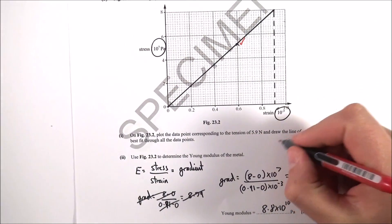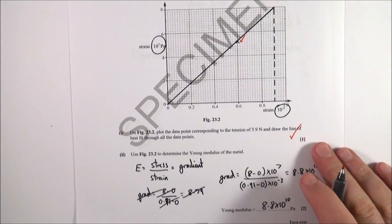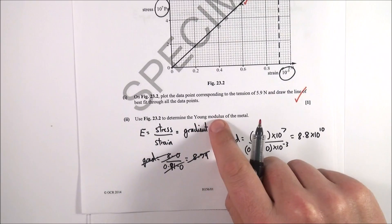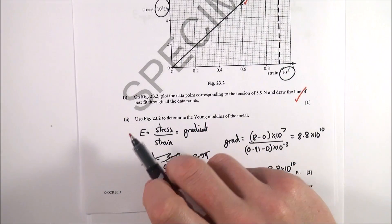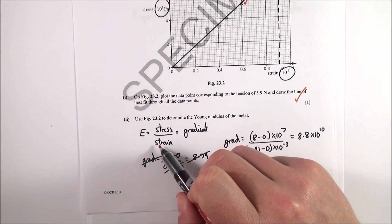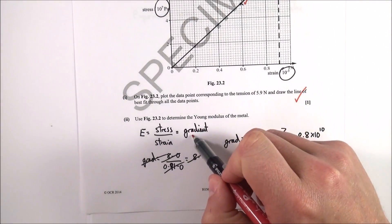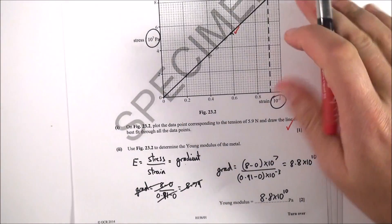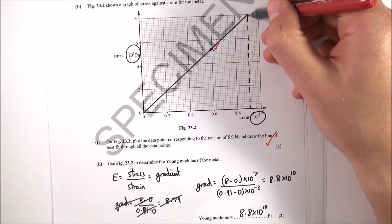The next bit: use this graph to determine the Young's modulus. First, we know that Young's modulus equals stress divided by strain, and that's equal to the gradient where you have this nice linear region. So I worked out my gradient and drew in a triangle.